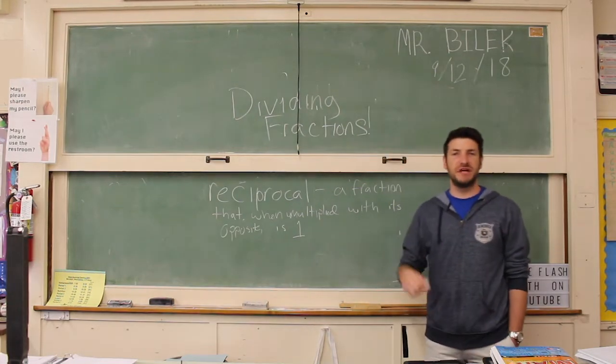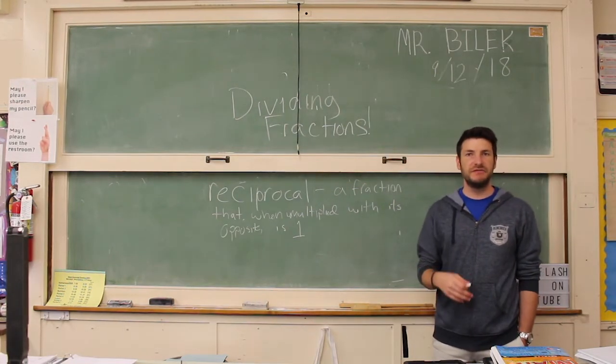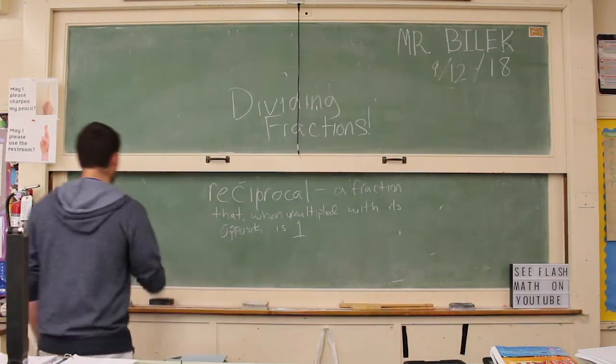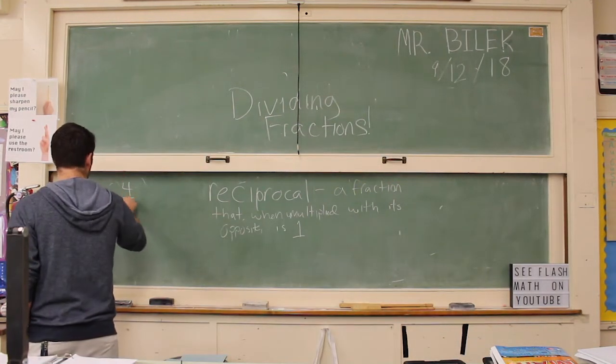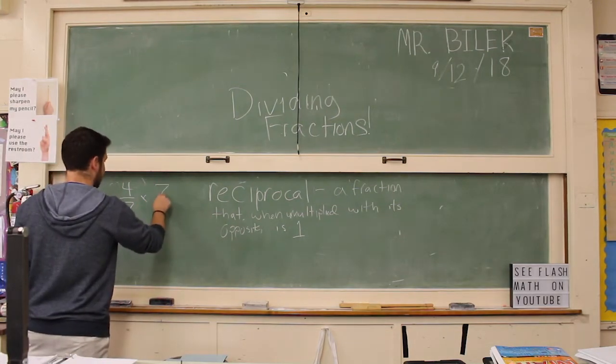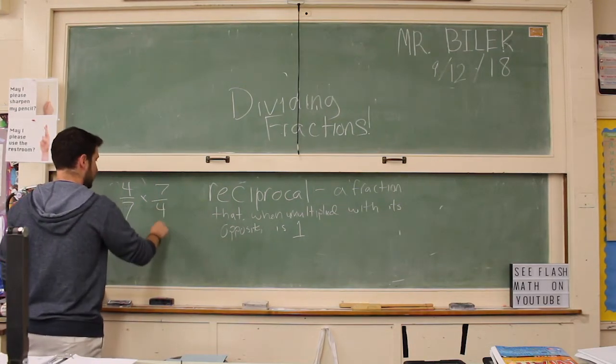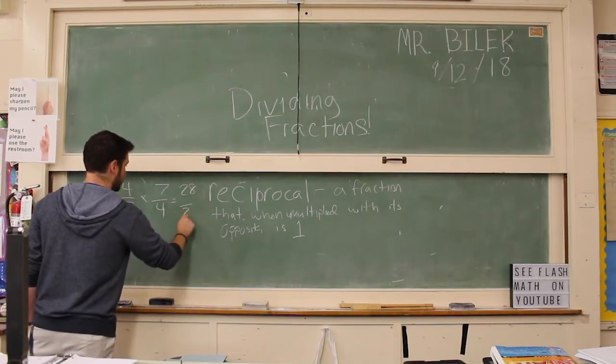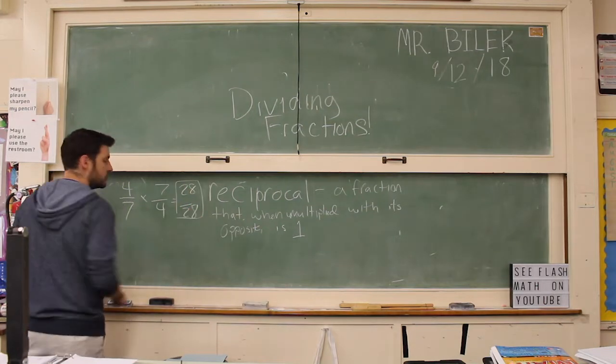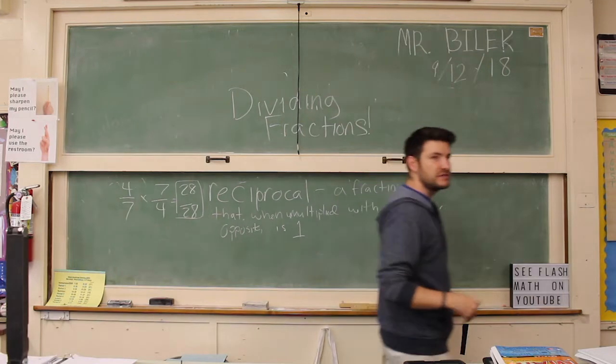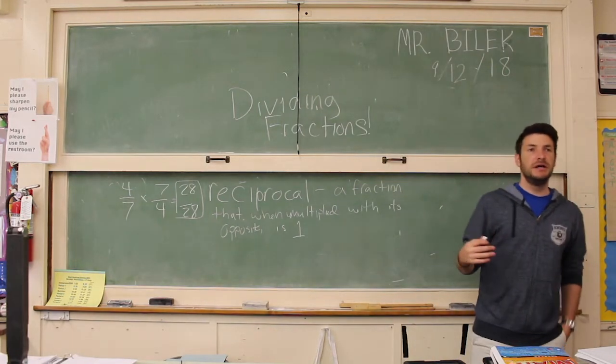So reciprocal is a fraction that when multiplied with its opposite is 1, and I'm going to give you an example right now. An example of that would be 4 over 7, multiply that by 7 over 4. You're going to end up with 28 over 28, and 28 over 28 you know is equal to 1.